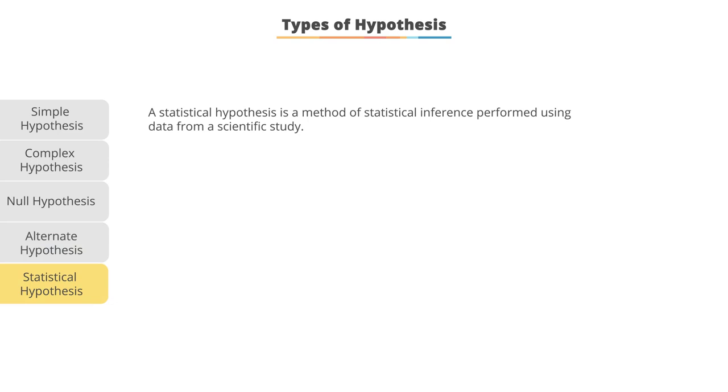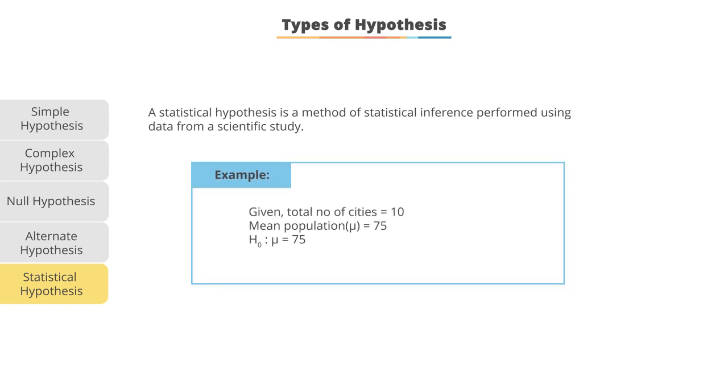And we have our statistical hypothesis as a method of statistical inference performed using data from a scientific study. So we might have a mean population of 75 from a total number of cities 10.